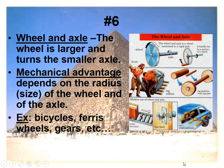Wheel and axle is the last simple machine. Note that the wheel is larger and it turns the smaller axle. If you look at the picture, the axle is the pipe that holds the wheel on. The mechanical advantage depends on the radius of the wheel — the bigger the wheel, the slower it moves, but the more weight it can move. Examples of wheel and axle include bicycles, various wheels, and gears.